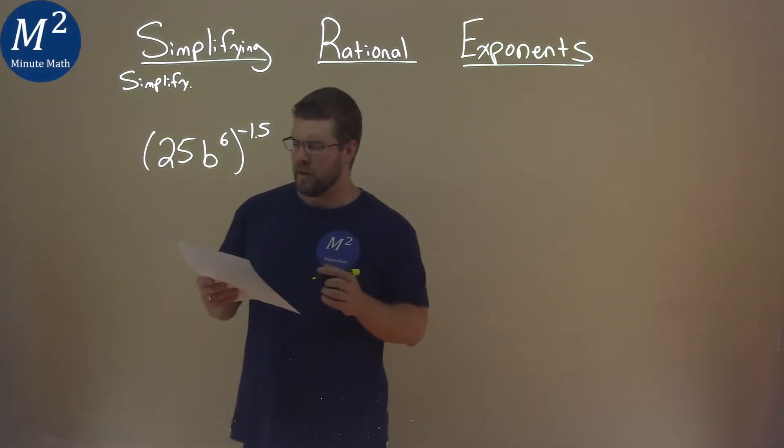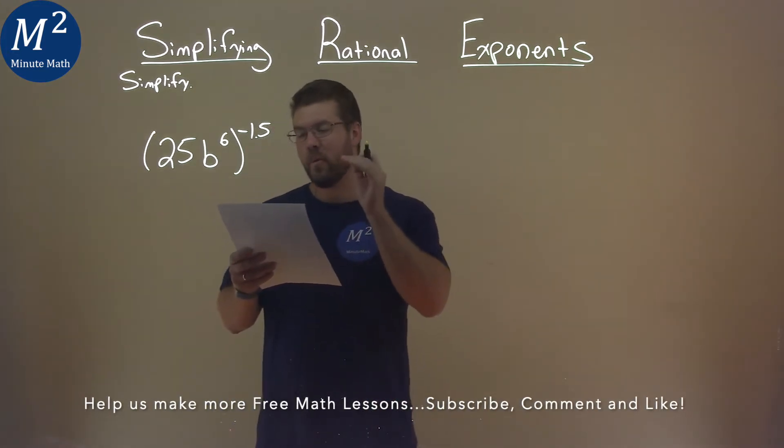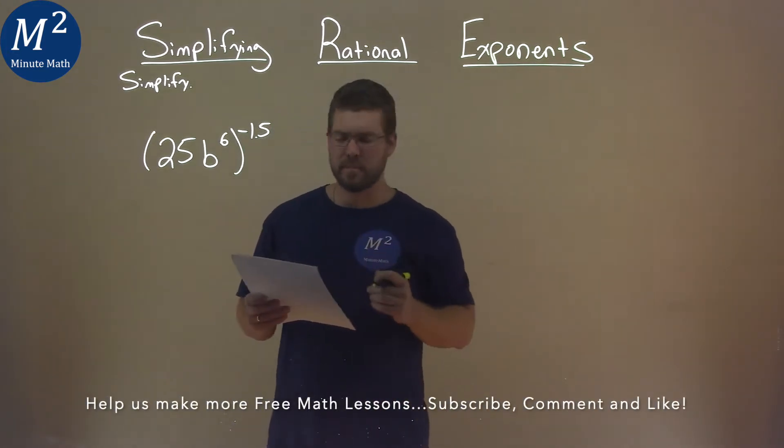We're given this problem right here: 25b to the 6th power, all to the negative 1.5 power, and we've got to simplify.